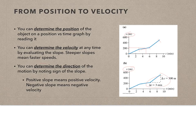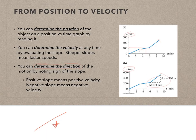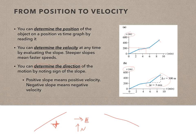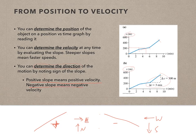I can determine direction by looking at the sign of the slope. If I have a positive slope, that means on a position versus time graph the position is increasing — so the object could be going to the right, up, east, or north. If I have a negative slope, position is going from high to low, meaning the object is going to the left, down, west, or south. So positive slope means positive velocity, and negative slope means negative velocity.